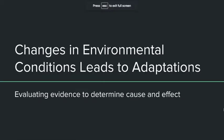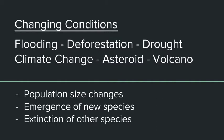Hello and welcome to this week's video homework. Today we're going to be talking about environmental changes and how those lead to adaptations. The skill I would like you to develop is being able to evaluate evidence to determine cause and effect relationships. The claim I'm making is that changing conditions — flooding, deforestation, drought, asteroids, volcano eruptions — cause organisms to adapt and change.